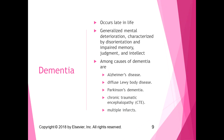Dementia tends to occur later in life. It is a memory disorder — generalized mental deterioration characterized by disorientation and impaired memory, judgment, and intellect. There are many causes of dementia, including Alzheimer's disease, which involves physical deterioration of the cerebral cortex; diffuse Lewy body disease, also known as Lewy body dementia; Parkinson's dementia, which is late-stage Parkinson's; chronic traumatic encephalopathy; and multiple infarcts. Many different types of brain damage can cause dementia.